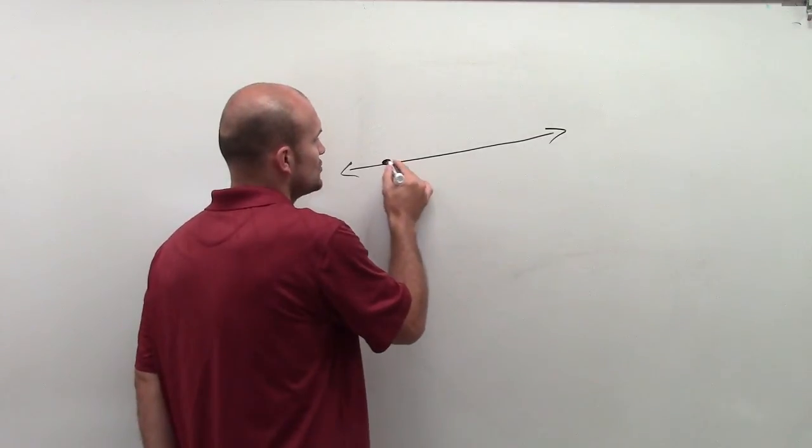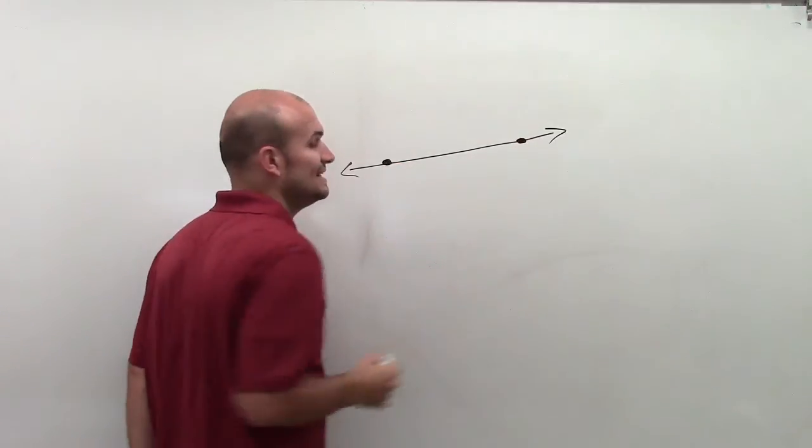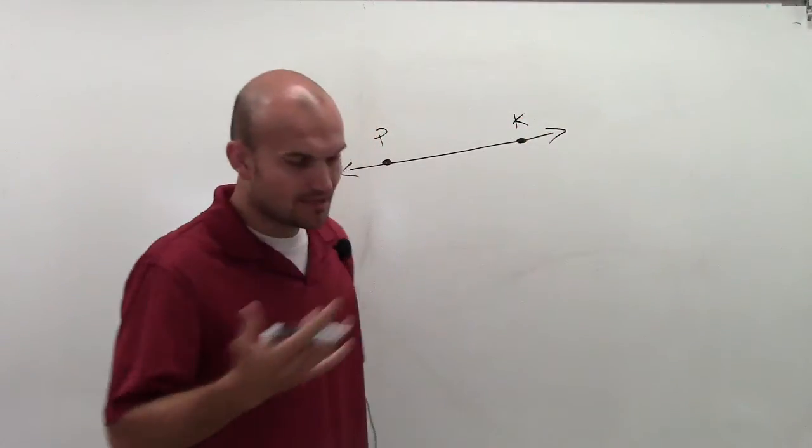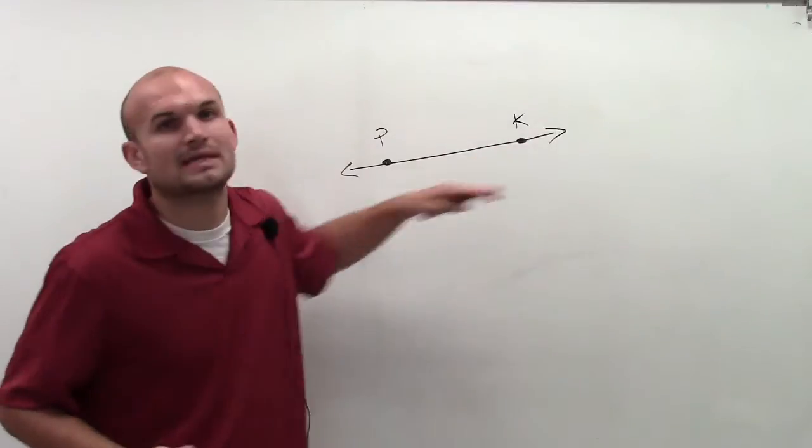Well, to first draw a line, we only need two points, which I'll label P and K. Now, when we talked about a line, we said that it continues without end.